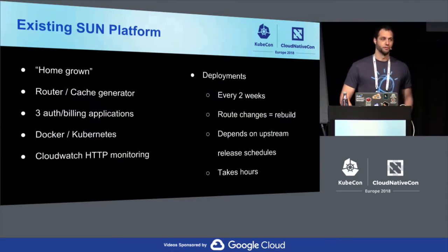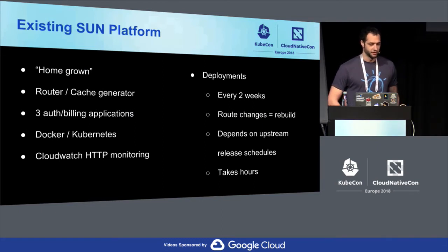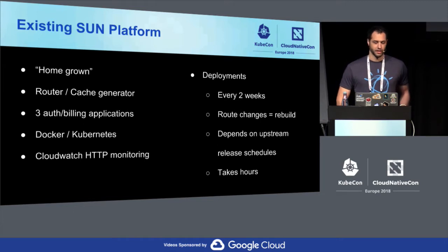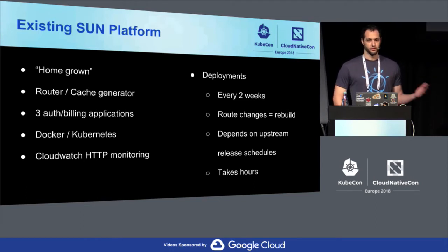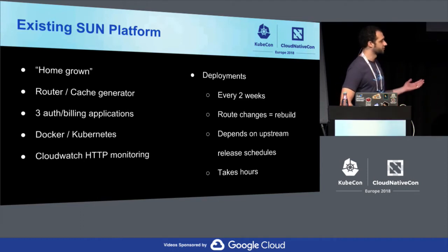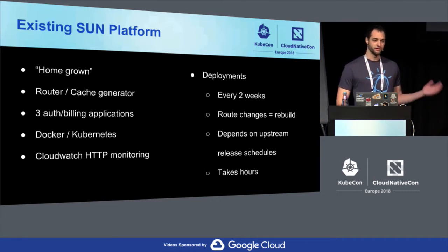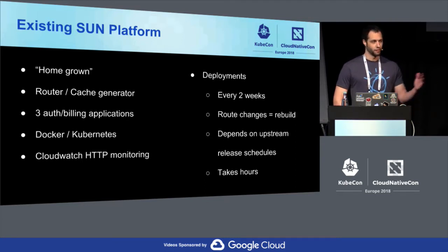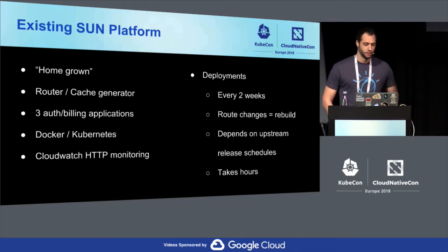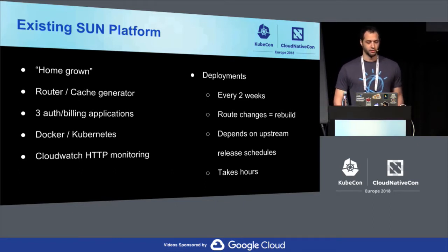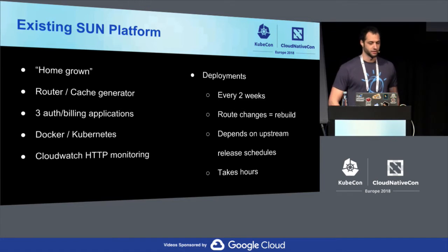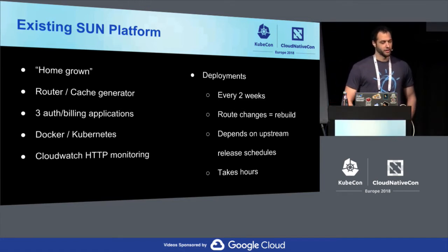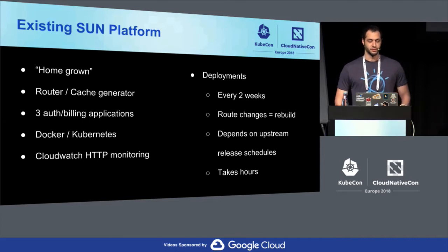The existing Sun Platform was homegrown and cloud native. We have a router, a main gateway, and a cache generator. The cache generator helps us align requests that look like other similar requests. So if you make a request for the weather in Copenhagen, most likely somebody's already made that request, and we build cache templates known as edge side includes to serve that same cached data. We have three homegrown auth and billing applications, run everything in Docker, and we've recently migrated to Kubernetes. We use CloudWatch for our HTTP monitoring.